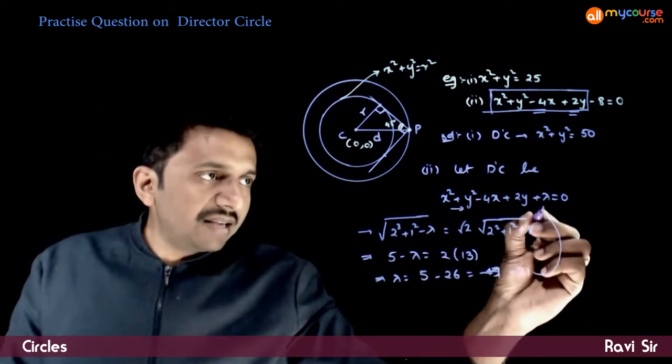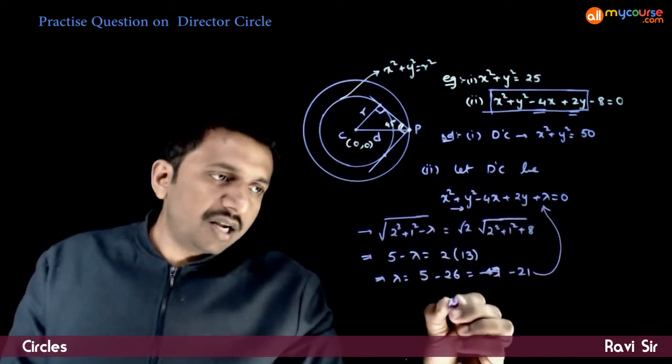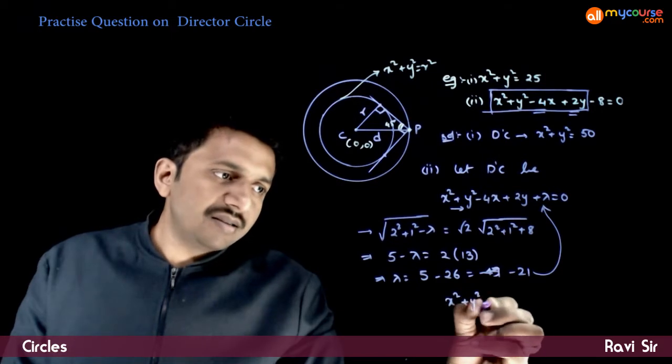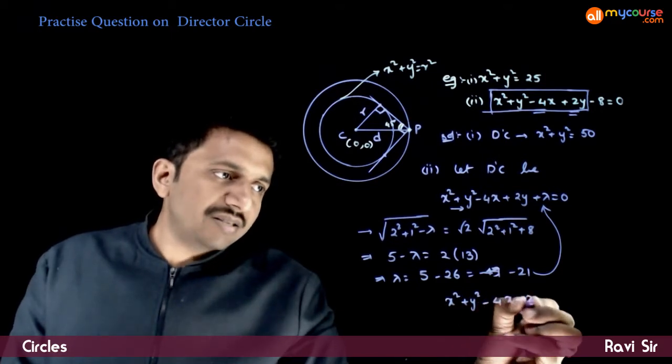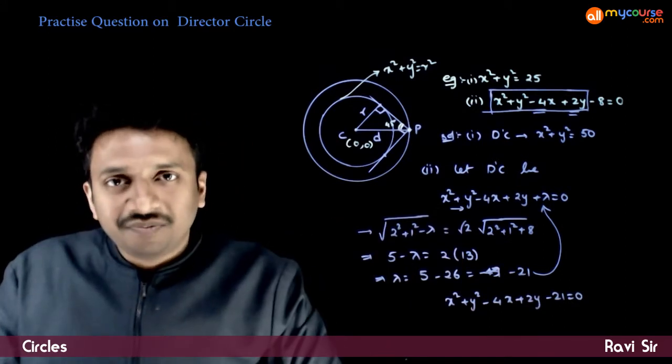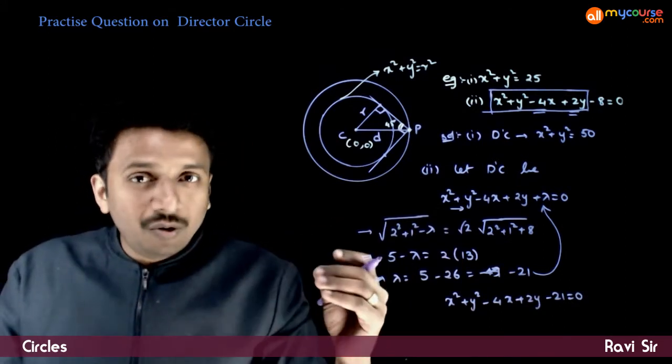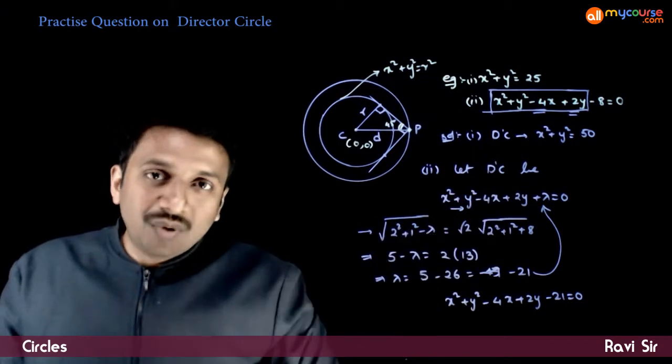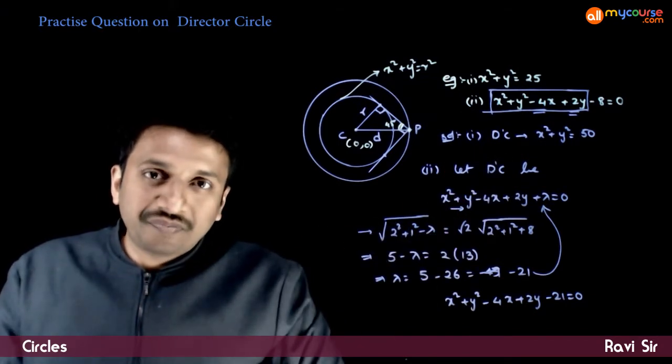So, if you substitute it back in this equation, the required director circle is x square plus y square minus 4x plus 2y minus 21 is equal to 0. So, I hope you have understood the derivation of this question. Thank you.